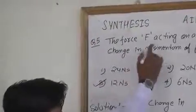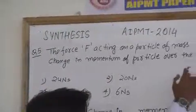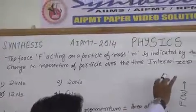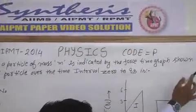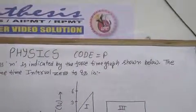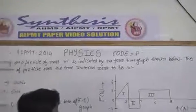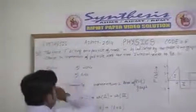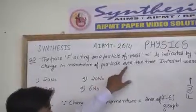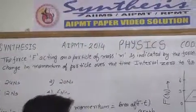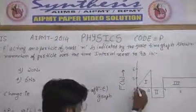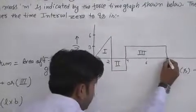The force F acting on a particle of mass N is indicated by the force-time graph shown below. We need to find the change in momentum of the particle over the time interval 0 to 8 seconds.